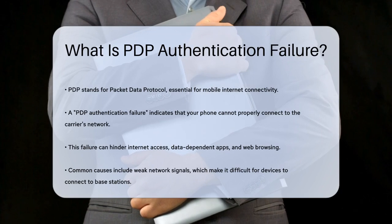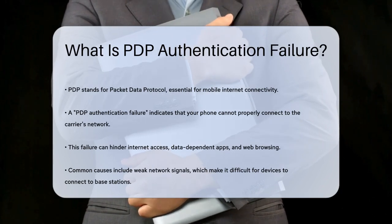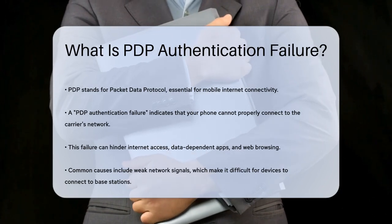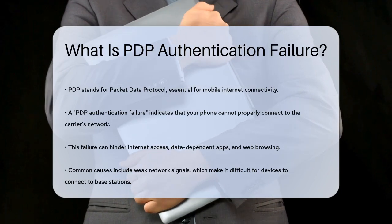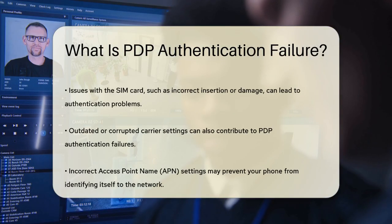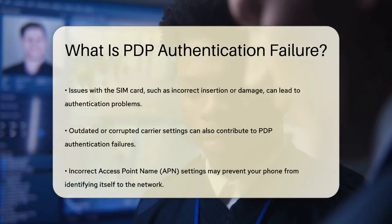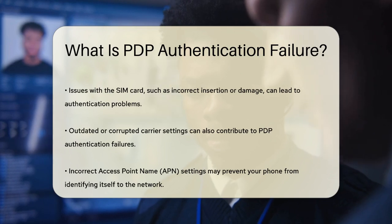So what happens when PDP authentication fails? Essentially, it means your phone can't connect to your carrier's network properly. This failure can prevent you from accessing the Internet, using data-dependent apps, or even browsing the web.